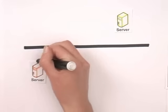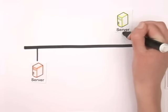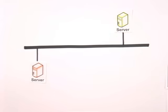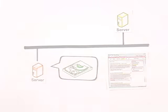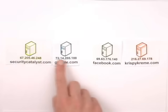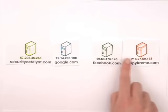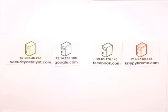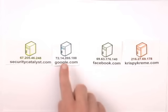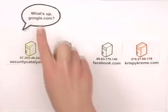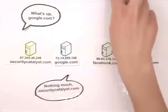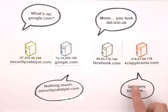The internet is useful because two computers connected directly to this wire can communicate. A server is a special computer connected directly to the internet, and web pages are files on that server's hard drive. Every server has a unique internet protocol address, or IP address. Just like a postal address, IP addresses help computers find each other. But since 72.14.205.100 doesn't exactly roll off the tongue, we also give them names like google.com, facebook.com, or securitycatalyst.com.